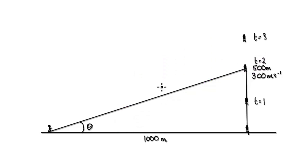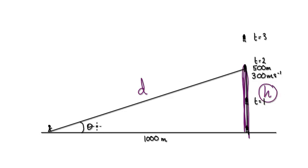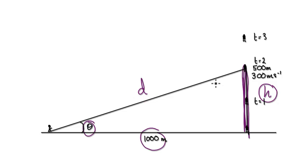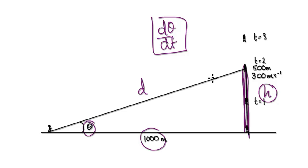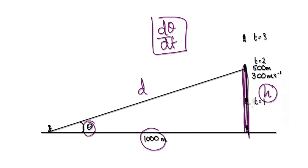So the first step is to find something that connects everything. Let's call this h, the height, and let's call this length here d. When it comes to related rates, you want to look at the situation and find something that connects all the things that you want to know — you want to know h and you want to know theta.